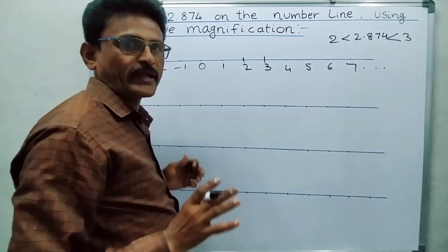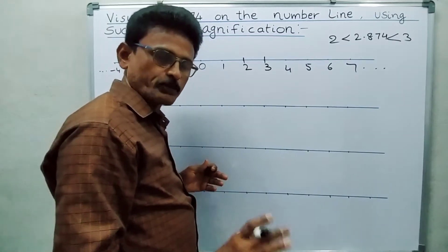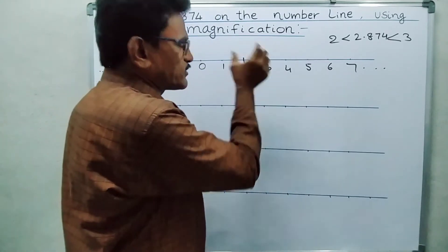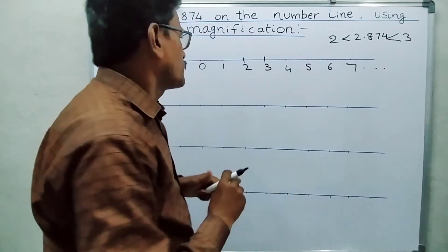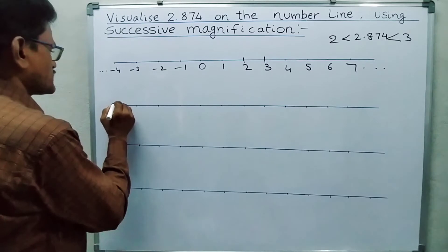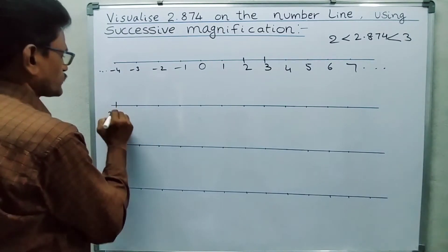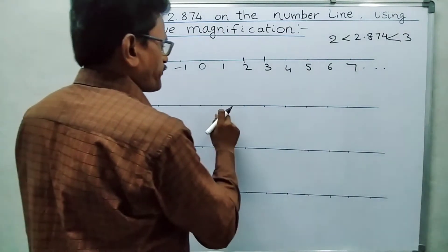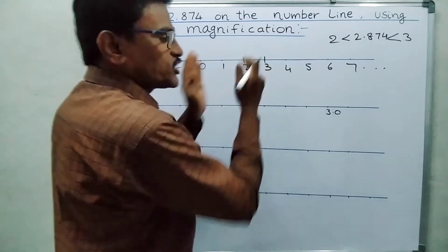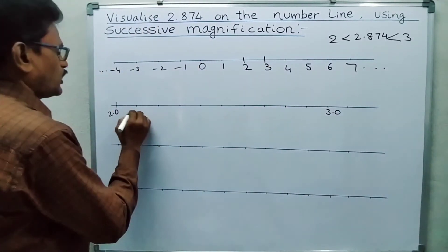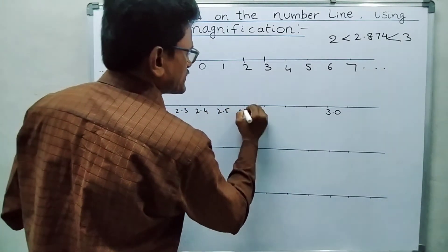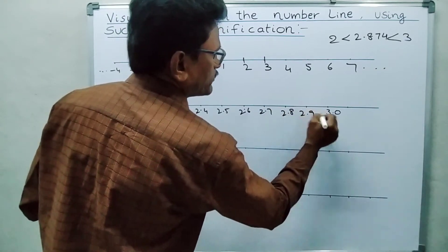So our number 2.874 lies between 2 and 3. Now, suppose we have a magnifying glass and observe this — it will expand. Suppose it magnifies 10 times: we take this one as 2.0 and this as 3.0, and mark 2.1, 2.2, 2.3, 2.4, 2.5, 2.6, 2.7, 2.8, 2.9, 3.0.